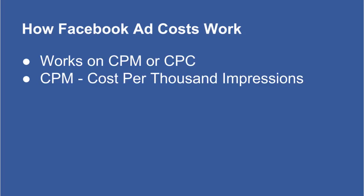CPM is cost per thousand impressions — it means just that: what do you have to pay to get your ad in front of a thousand people? That's just showing your ad. It doesn't matter if they shared it, clicked it, or liked it. Now if you have a really good audience of a thousand people that costs maybe $10 to reach and you can get a lot of clicks and shares, it's advantageous to use CPM because you have an ad with high engagement.